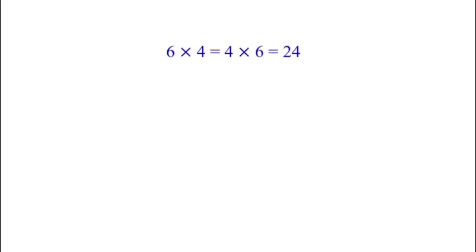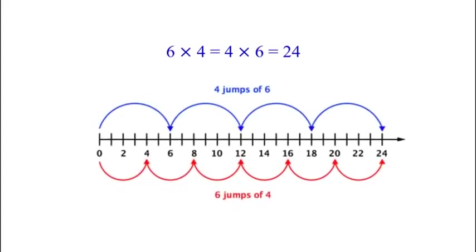We know that 6 into 4 is equal to 4 into 6, which is equal to 24. Let us solve this on the number line. In the upper half, 6 into 4 means 4 jumps of 6 units each. In the lower half, 4 into 6 means 6 jumps of 4 units each. The answer in both cases will be 24.